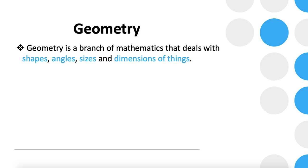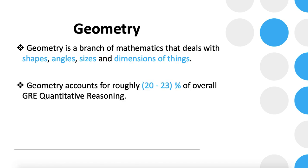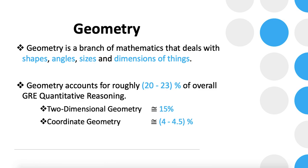Now the important thing is why geometry is important. Geometry accounts for roughly 20 to 23 percent of overall GRE quantitative reasoning. Breaking this down: two-dimensional geometry covers around 15 percent, coordinate geometry covers around 4 to 4.5 percent, and three-dimensional geometry covers around 2 to 2.5 percent. Combined, these roughly cover 20 to 23 percent of overall GRE quantitative reasoning.